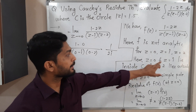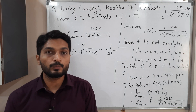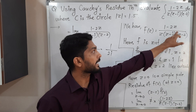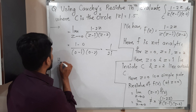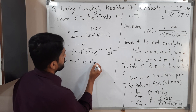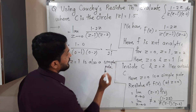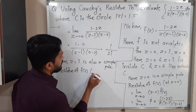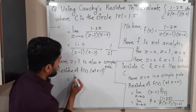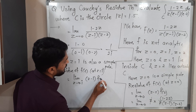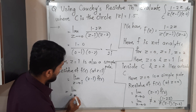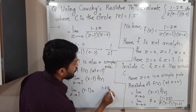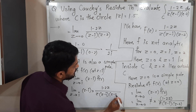We also need the residue at z equal to i, since it lies inside curve C. z equal to i is also a simple pole — pole of order 1 since the bracket has power 1. Using the same formula, we compute limit as z tends to i of (z minus i) times f(z), which is limit as z tends to i of (z minus i) times (1 minus 2z) upon z(z minus i)(z minus 2). We can cancel (z minus i).